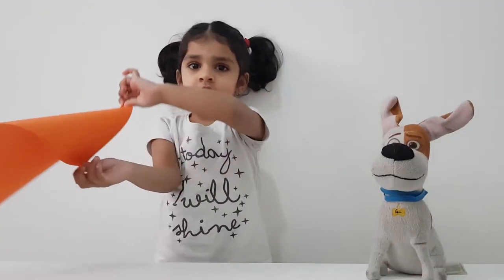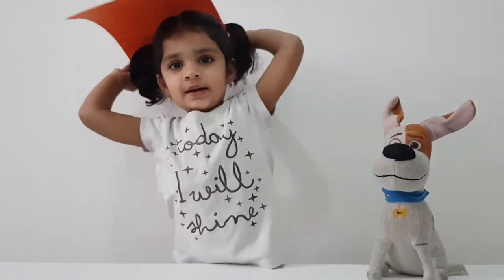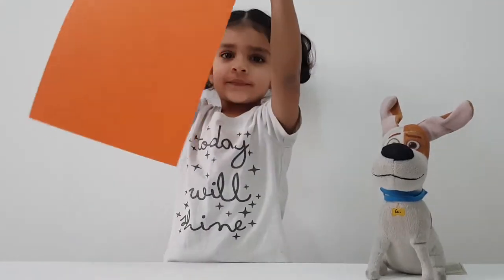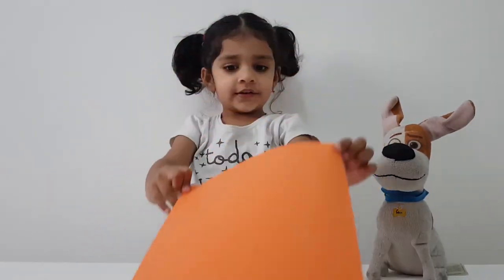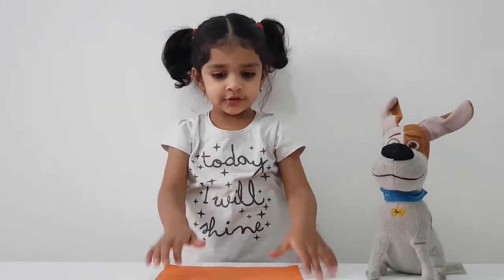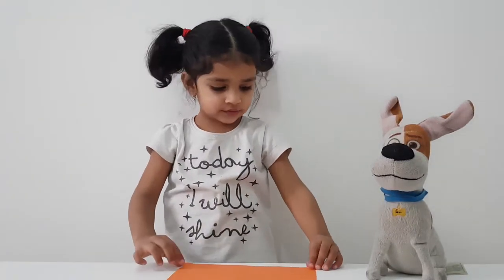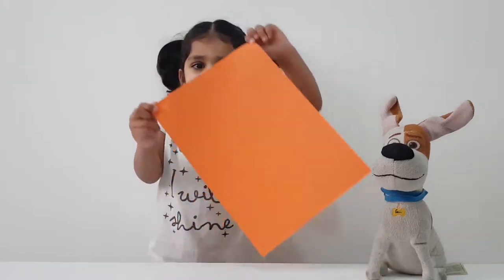What do you have in your hand Mira? Orange. Orange color paper? Yeah. Orange. Okay. Then shall we make boat of orange color paper? Yeah. Okay. Let's start it then.